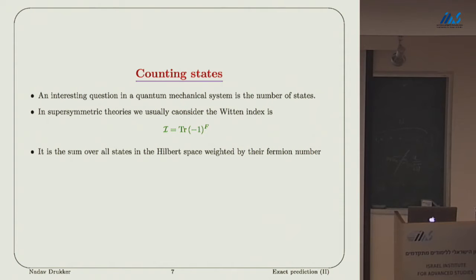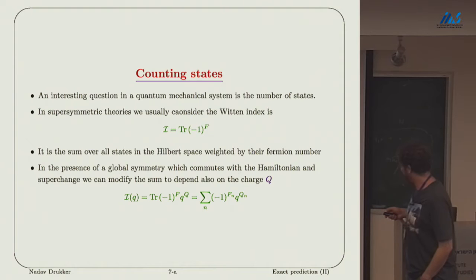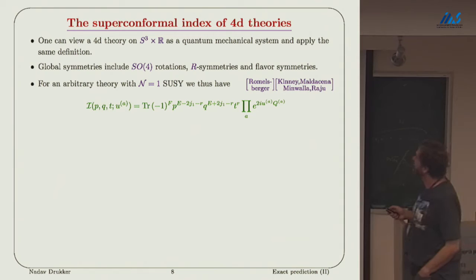What is the index? We want to calculate the super conformal index. We know what the Witten index is. It counts the number of states in any quantum mechanical system with a plus and minus sign, depending on the fermion number. If we have some global charges, we can refine it by adding a charge Q and having some fugacity little q that refines the index.